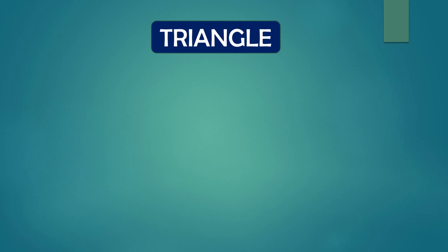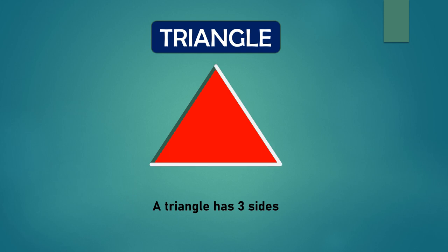For triangle. A triangle has three sides: one, two, three. It also has three corners: one, two, three.